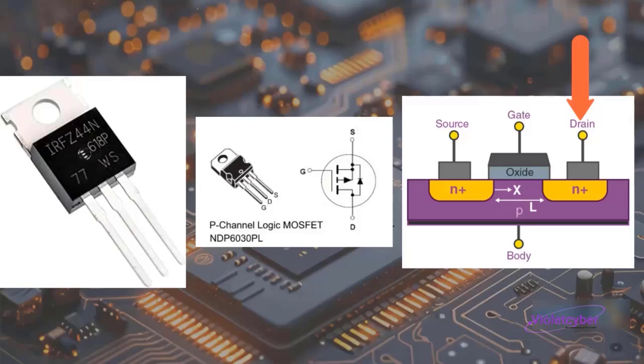The drain pin is responsible for controlling the output current of the transistor and is somewhat equivalent to the collector pin in BJT transistors. The source pin is responsible for monitoring and controlling the output voltage in MOSFETs, similar to the emitter pin in BJT transistors.